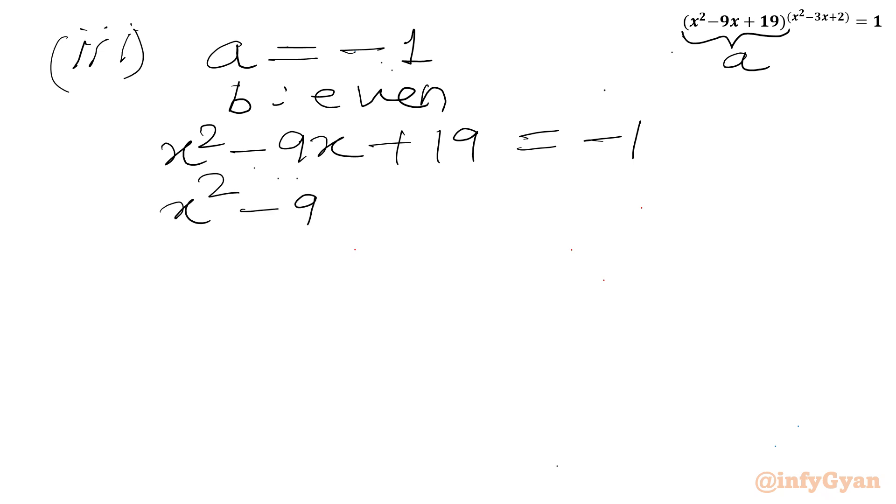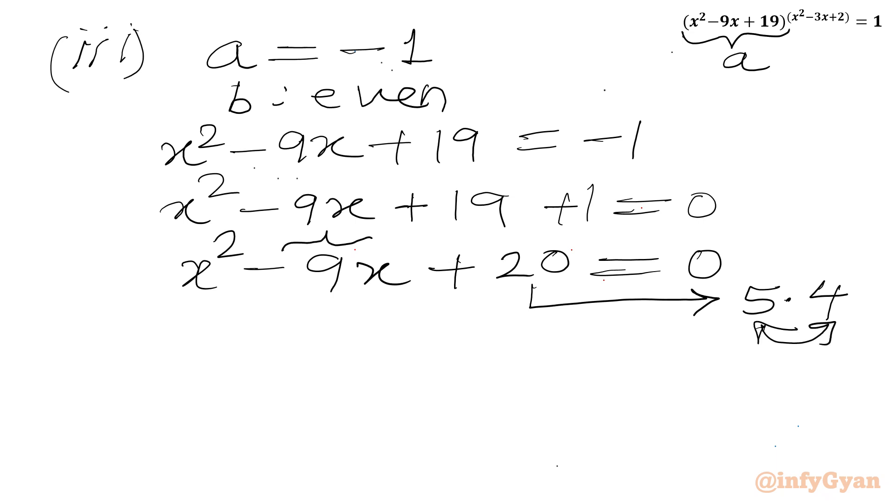Or x square minus 9x plus 20 equal to 0. Now we can see the factors of 20 as 5 times 4, and if I will add these two I will get middle coefficient 9. So writing here x square minus 9x can write as minus 5x minus 4x, product will be 20x square equal to 0.